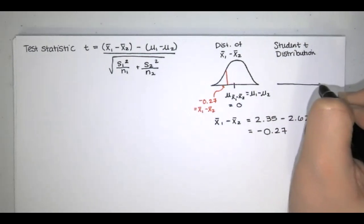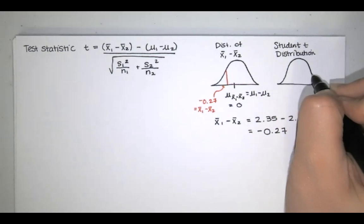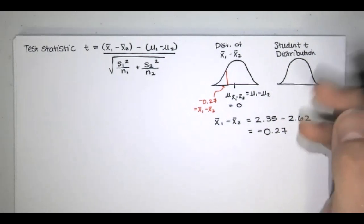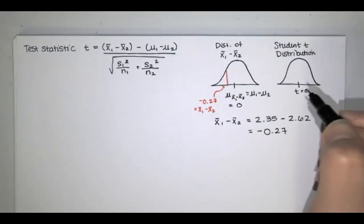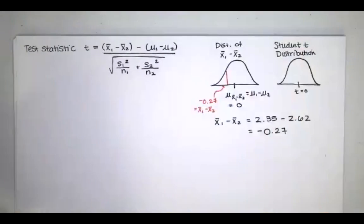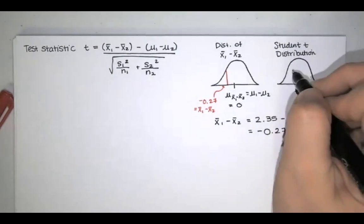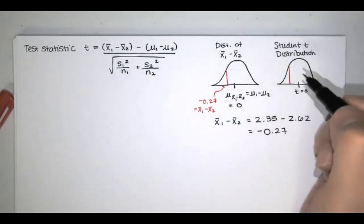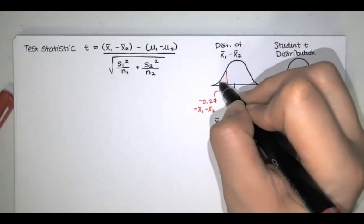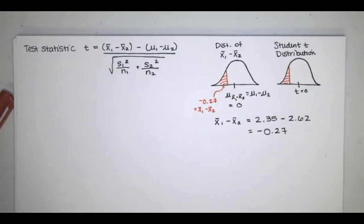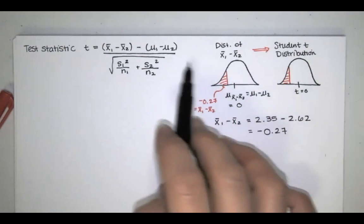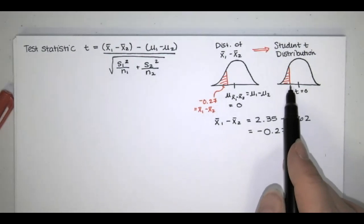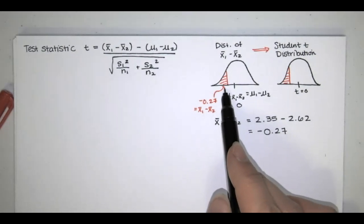The student t distribution has the same basic shape as the normal distribution, but it's just a little wider — the variation is larger, the standard deviation is more than one, and it varies for different values of the sample size. We're trying to find this test statistic t that corresponds to a certain area to the left, and that area to the left after conversion will be equal to the area to the left before conversion. We're finding the test statistic t that corresponds to x sub 1 bar minus x sub 2 bar.